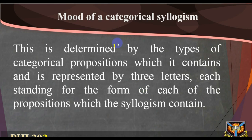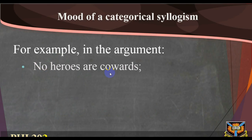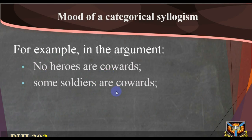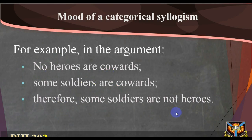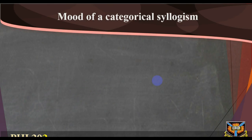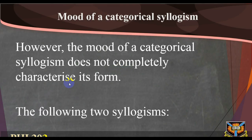The mood of a categorical syllogism is determined by the types of categorical propositions which it contains. It is usually represented by three letters, each standing for the form of each of the propositions which the syllogism contains. For example, in the argument: 'No heroes are cowards. Some soldiers are cowards. Therefore, some soldiers are not heroes.' The mood will be E I O.